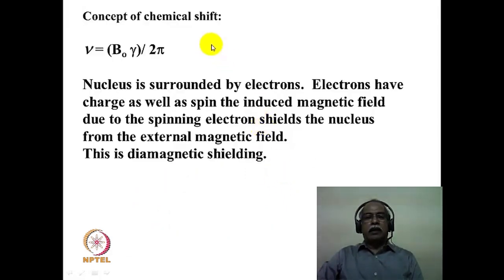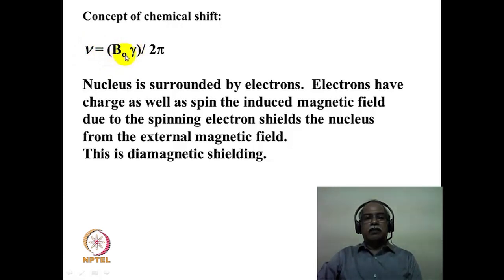If the concept of chemical shift were to be introduced, one has to understand that based on the basic NMR equation, one would expect all the hydrogens to come at the same resonance frequency, because for a hydrogen atom, gamma is constant and B0, the applied magnetic field, is constant for a given field strength. However, we seldom observe the same frequency for all the different types of hydrogens present in a molecule. There must be a reason that different hydrogens show different frequencies in the NMR spectrum, which makes NMR a very valuable tool for structural elucidation.